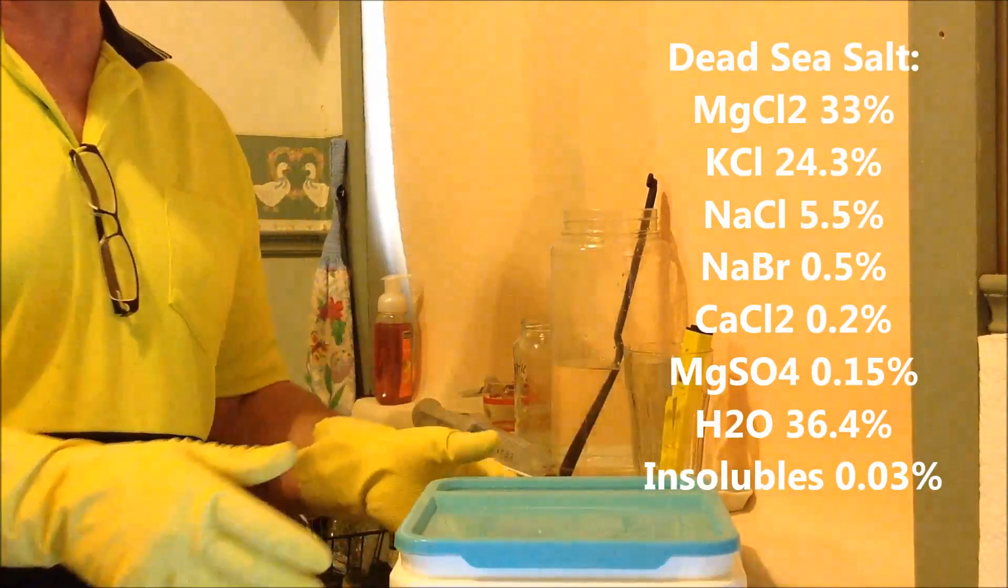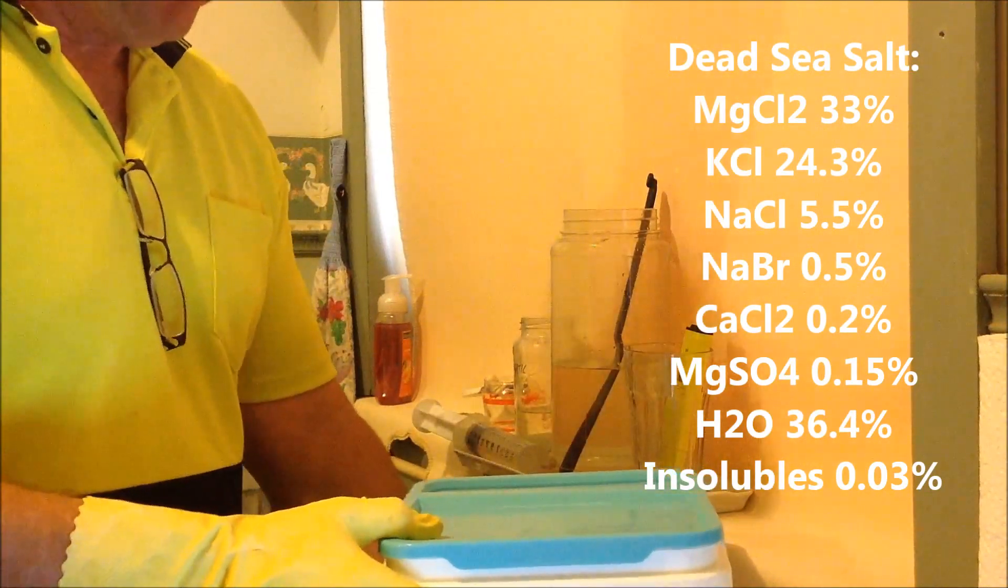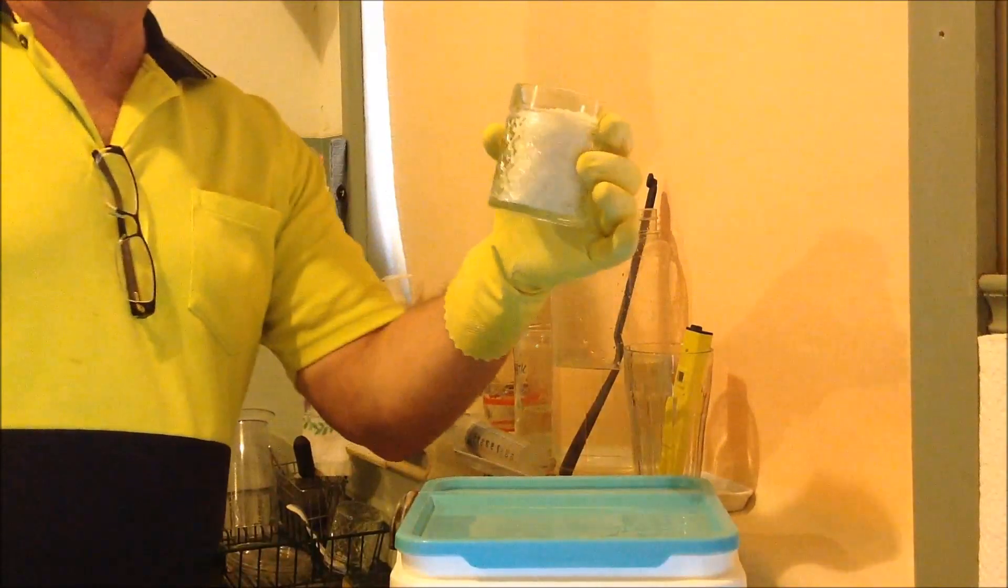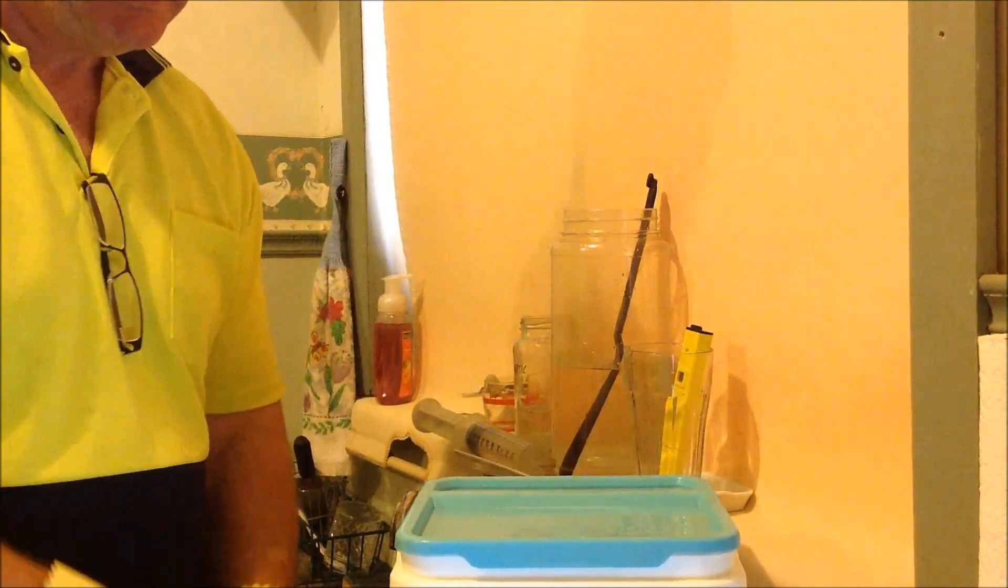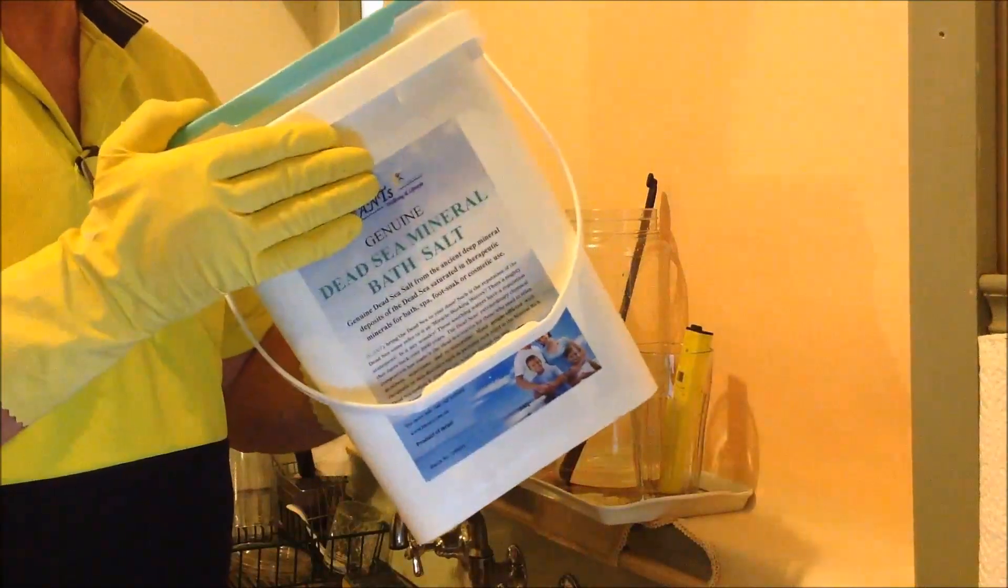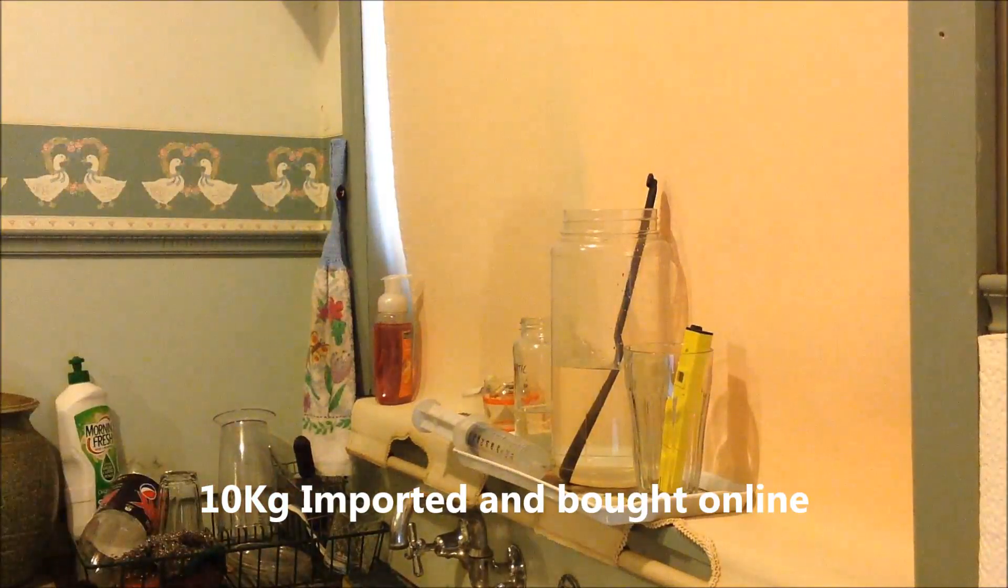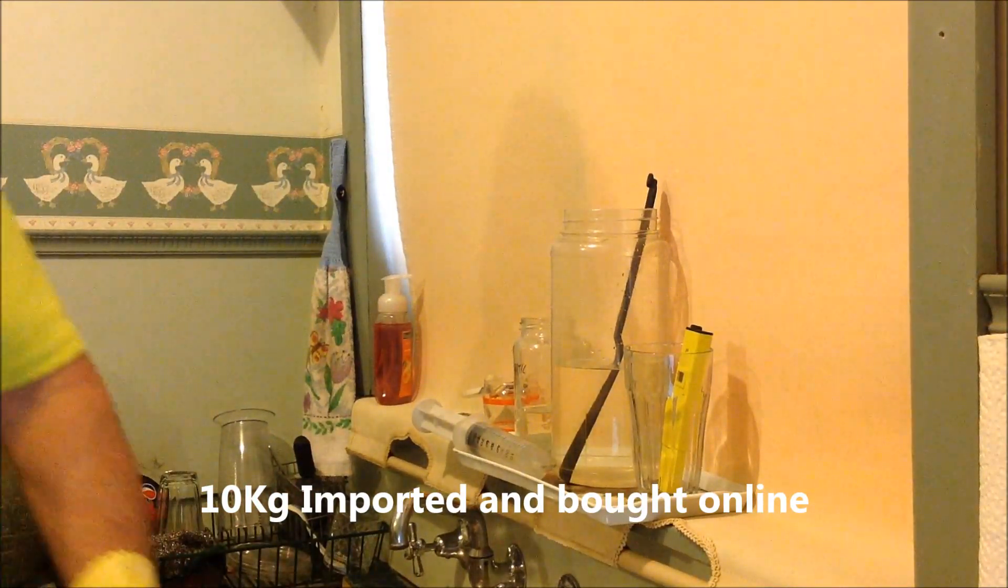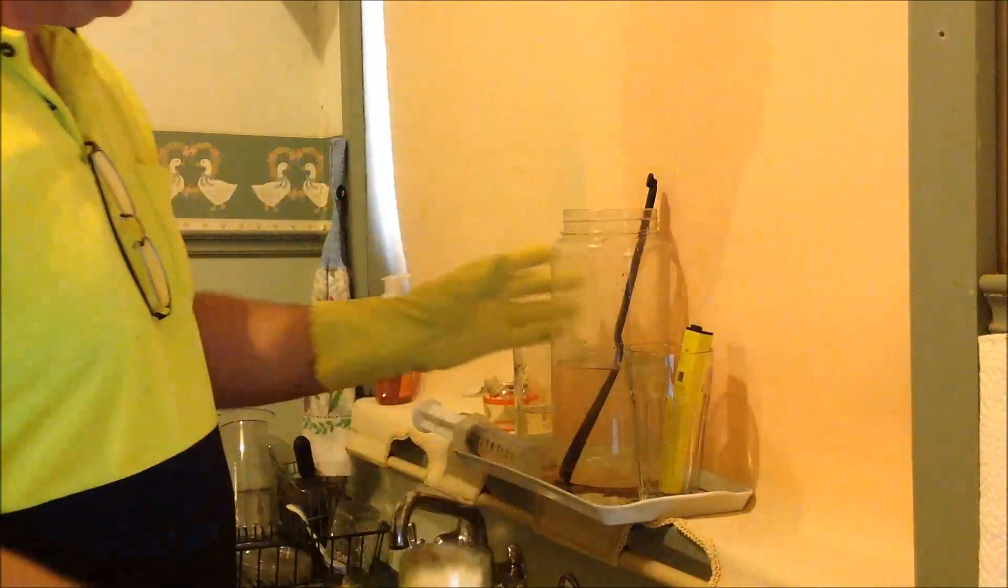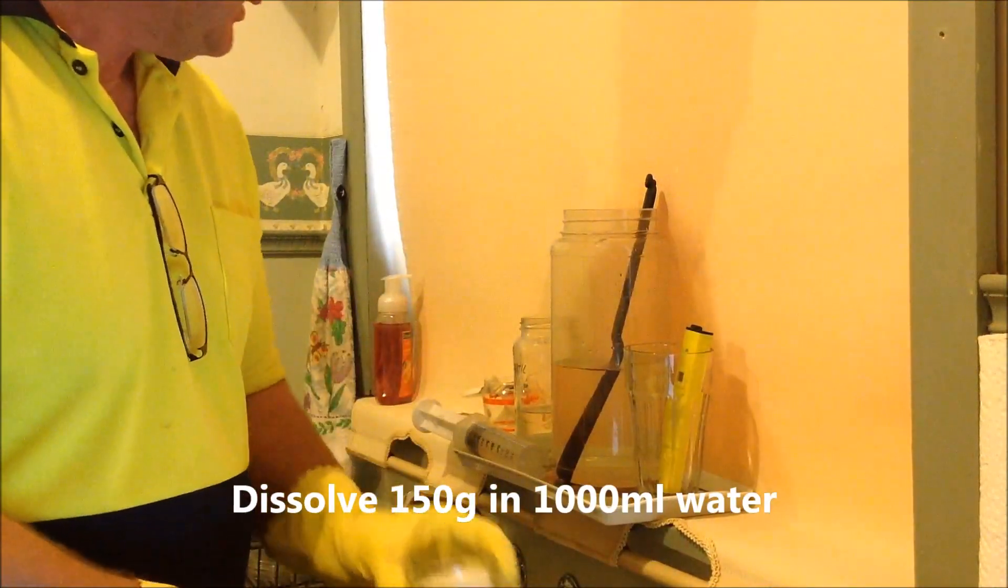So you want to get into ORMUS production. One of the simplest ones you will do is Dead Sea salt. Here I have 150 grams measured by weight. You don't have to buy it in big containers like this, but if you get into it you can buy larger containers imported from the internet. I found that 150 grams in about a liter of water is a manageable amount to work with.